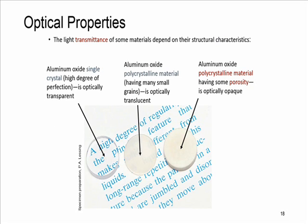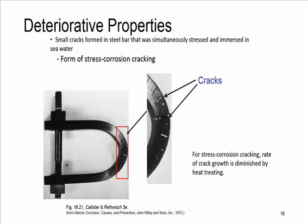When we talk about optical properties, we mean the light transmission property of a material. This in some materials depends on their structural characteristics. Here you see how crystal structure results in different optical properties of the same type of material. Deterioration is a gradual decline in quality, service, or rigor. Deteriorative properties measure response to environmental factors including moisture, oxygen, or UV radiation. Here in the picture you see how a steel bar is cracked under stress and corrosion.